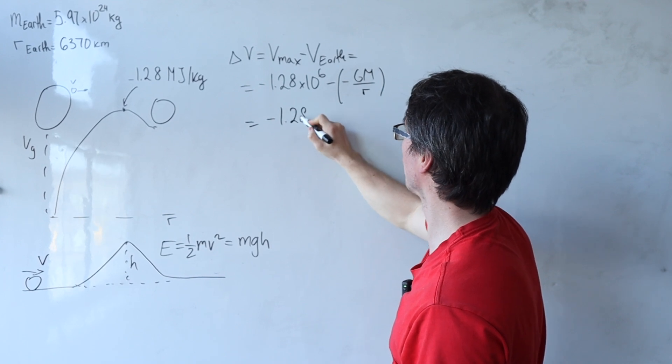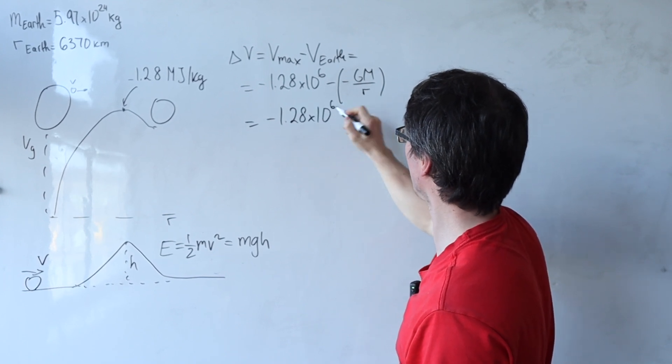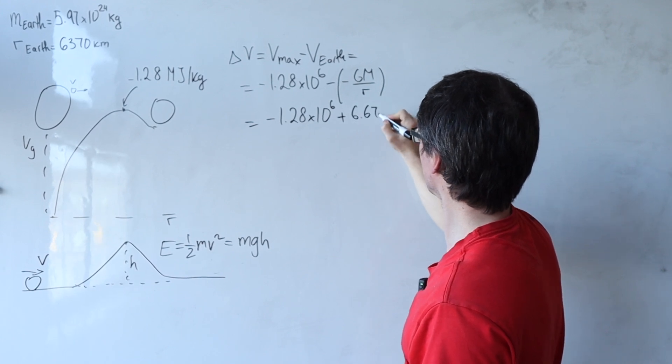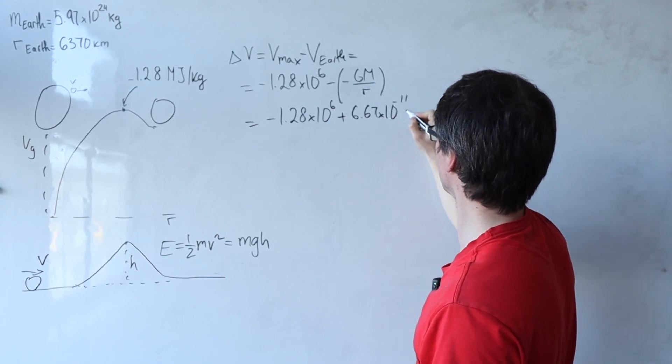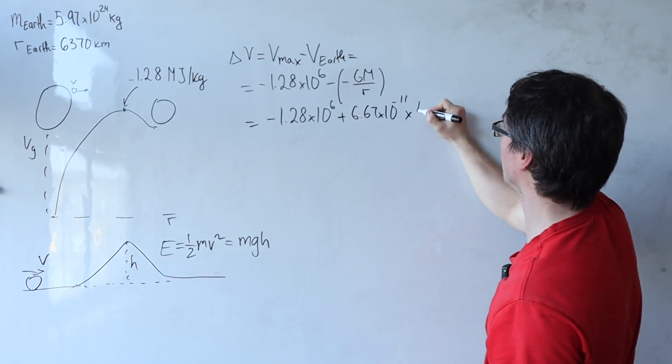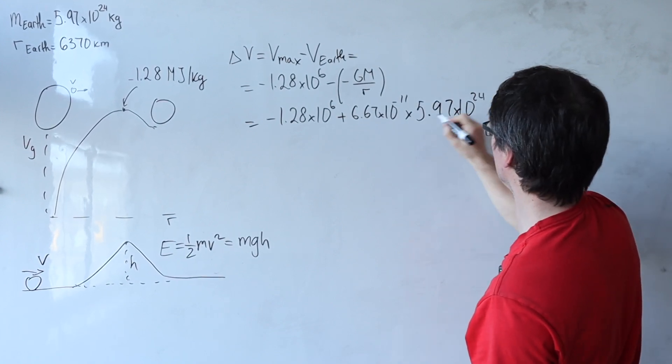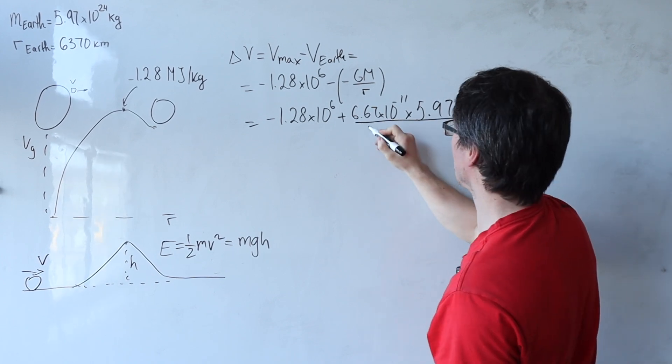This here will be equal to minus 1.28 times 10 to the power of 6, minus minus gives me a plus 6.67 times 10 to the power of minus 11, the mass of the Earth, 5.97 times 10 to the power of 24.